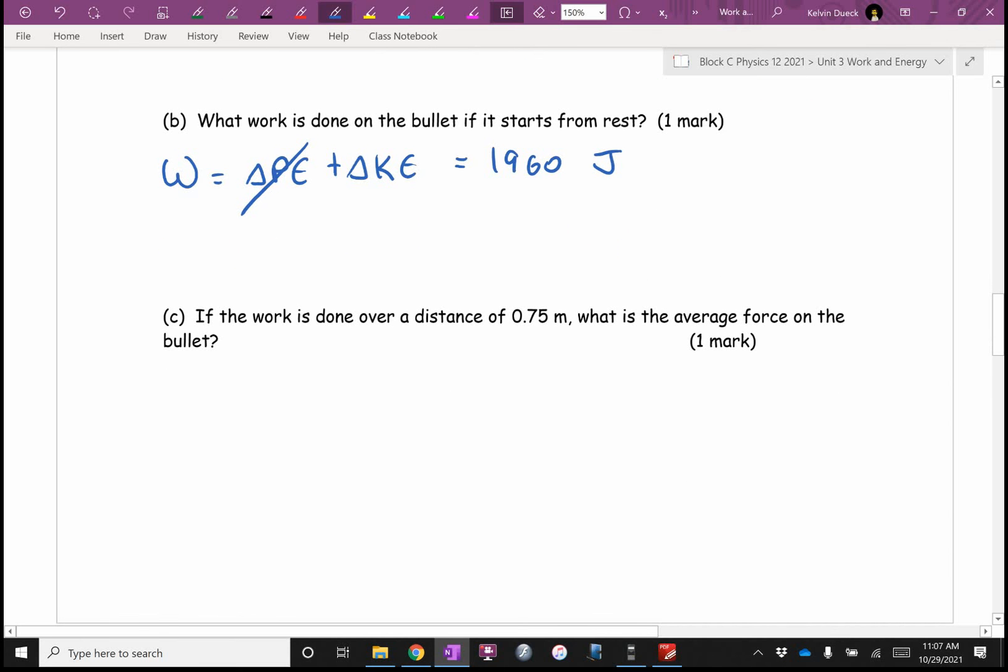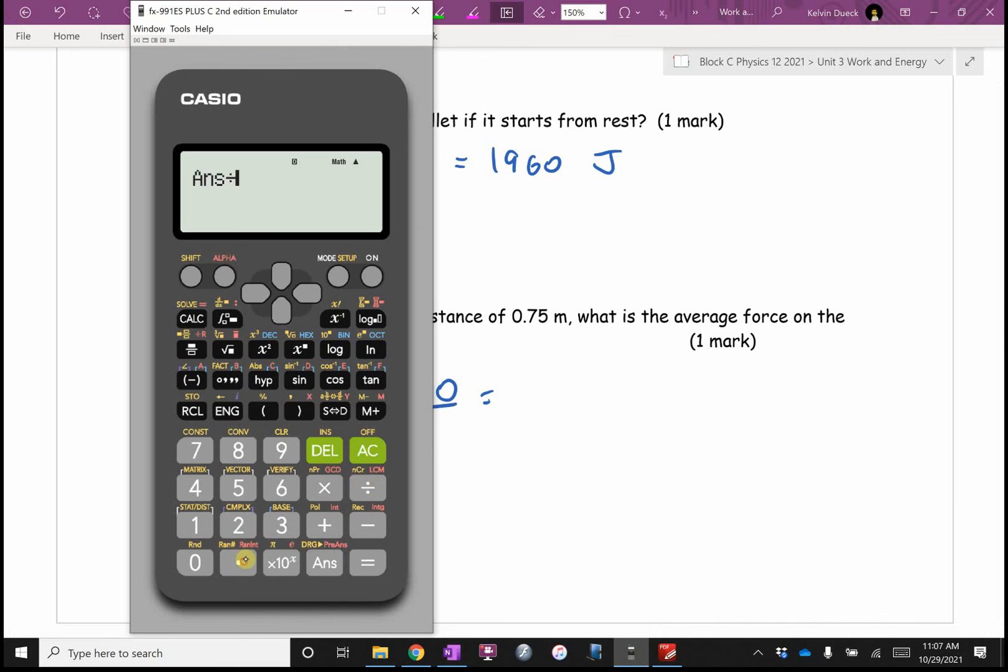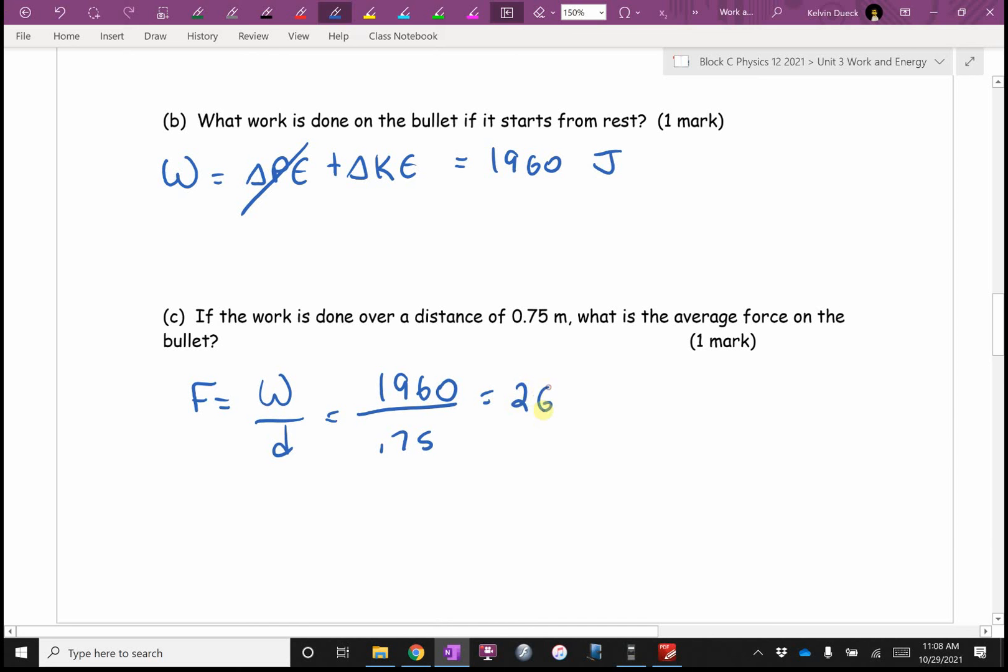If the work is done over a distance of 0.75 meters, what's the average force? I guess I would say force equals work over distance equals, I'm going to write 1960 but you know I'm going to use my answer button. Do you get 2,610 newtons? Why did I say average force? I'm pretty sure as the bullet moves along the barrel, the force isn't constant because what's driving the bullet forward are the compressed gases. As it moves down the barrel, there's more space for the gas to expand, therefore less force from the compressed gases. So that's why you often see me say average force when I'm talking about gun barrels. I doubt it's constant.